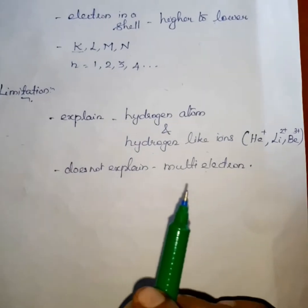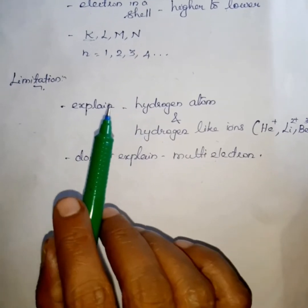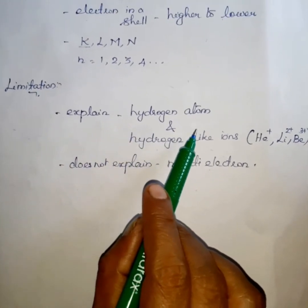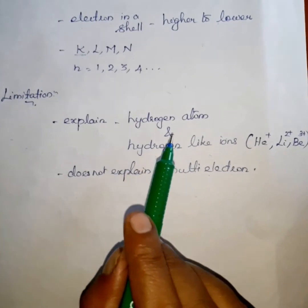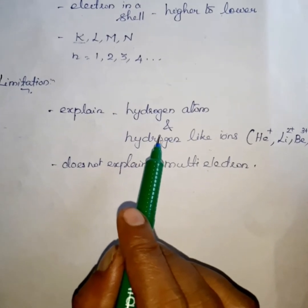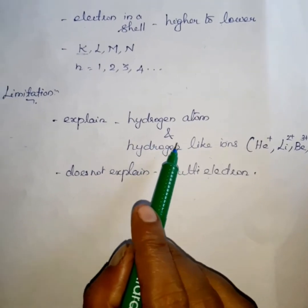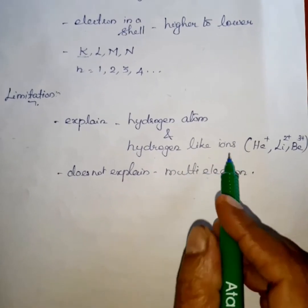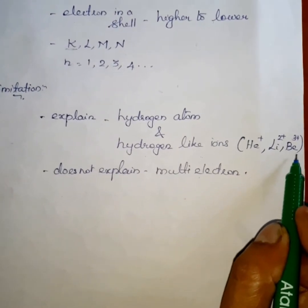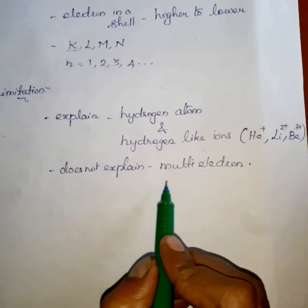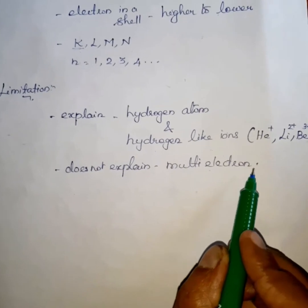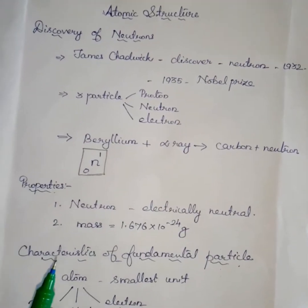Now we are going to study the limitation of the Bohr model. The Bohr model explains only the hydrogen atom, because hydrogen is the smallest atom. This model is only applicable to the hydrogen atom and hydrogen-like ions — for example, helium, lithium, beryllium. It does not explain multi-electron atoms.